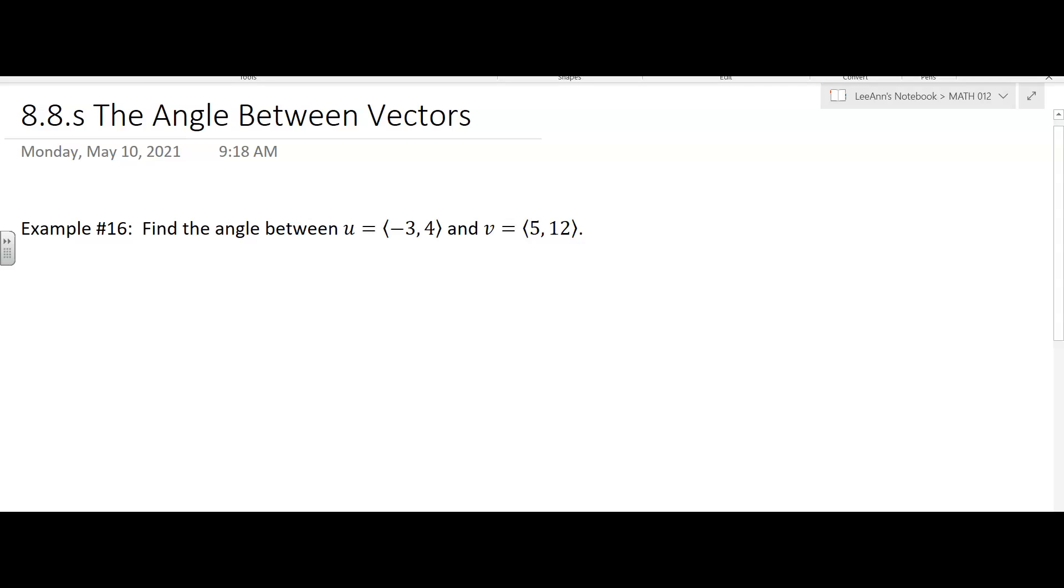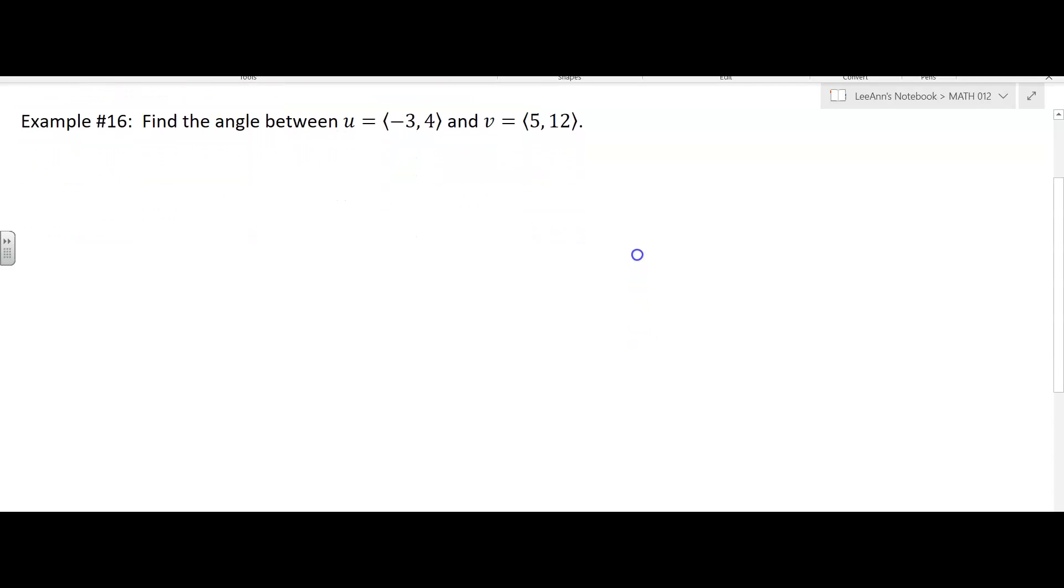Again, they want us to find the angle between the vectors. So they give us two vectors u and v, and we're going to say the cosine theta is equal to u dot v. I know I write it a little bit different than the book does, this is just the way I've always seen it until I looked in this book.